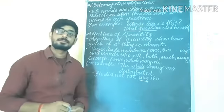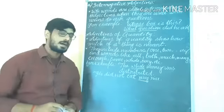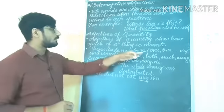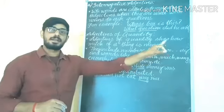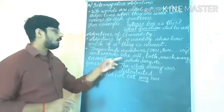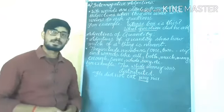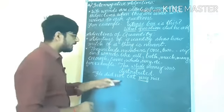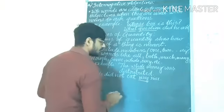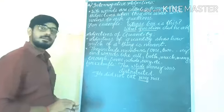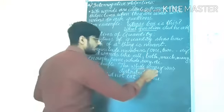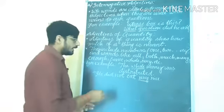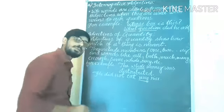The last kind is adjectives of quantity — they show how much of a thing is meant. They include numbers 1, 2, 3, 4, 5, 6, 7, 8, 9, etc., and words like all, both, much, many, enough, some, whole, any, etc. For example: 'The whole money was distributed' and 'He did not eat any rice.' Here 'whole' and 'any' are telling about the quantity of money and rice, which we cannot count.